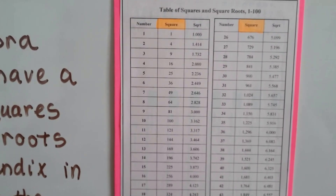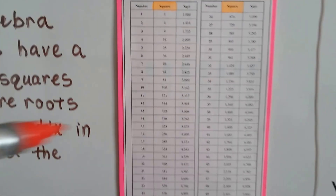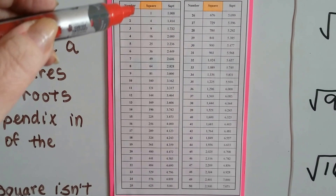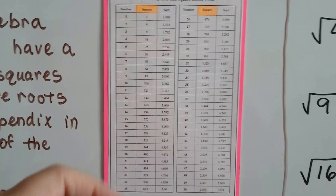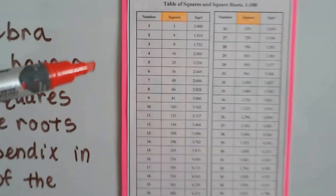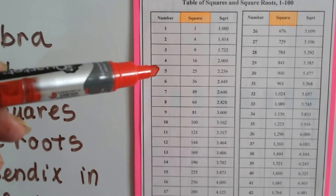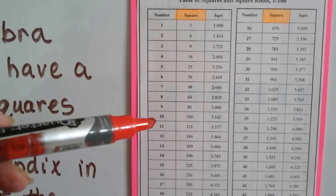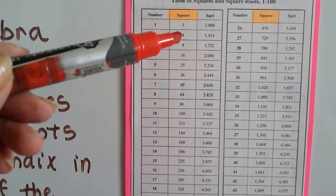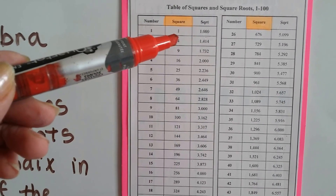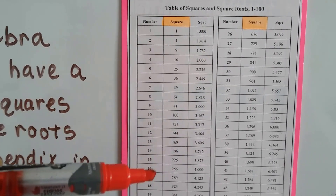I found this one. If you look, there are three columns, and because the paper wasn't long enough, the column continued on this side. The first column just has numbers: 1, 2, 3, 4, 5, 6, 7, 8, 9, 10 — it just keeps going. And it shows the square. The square of 1 is 1, the square of 4 is 2.